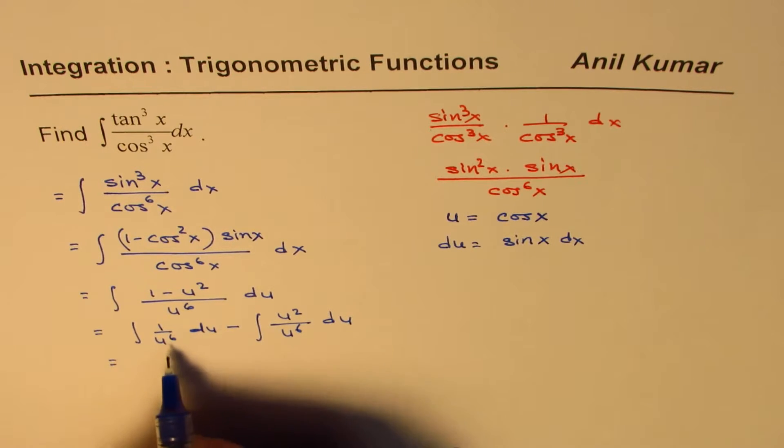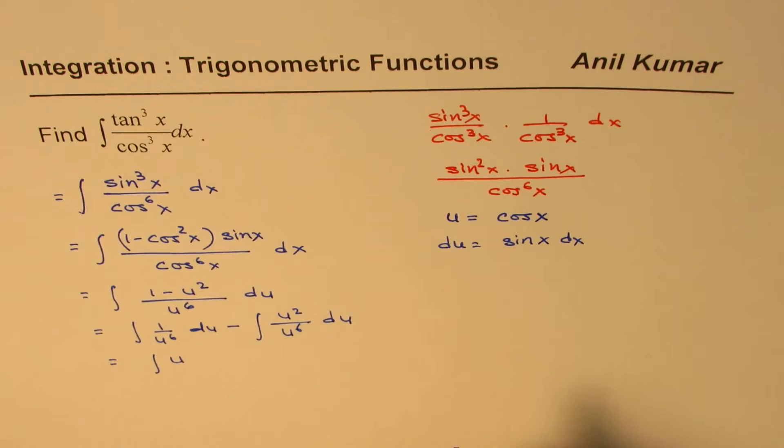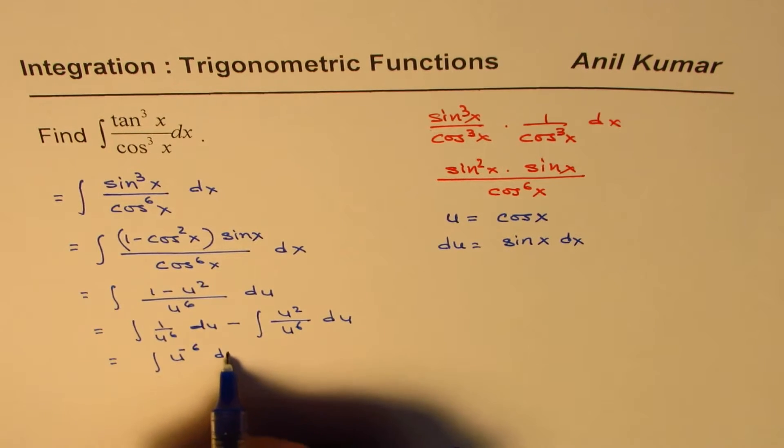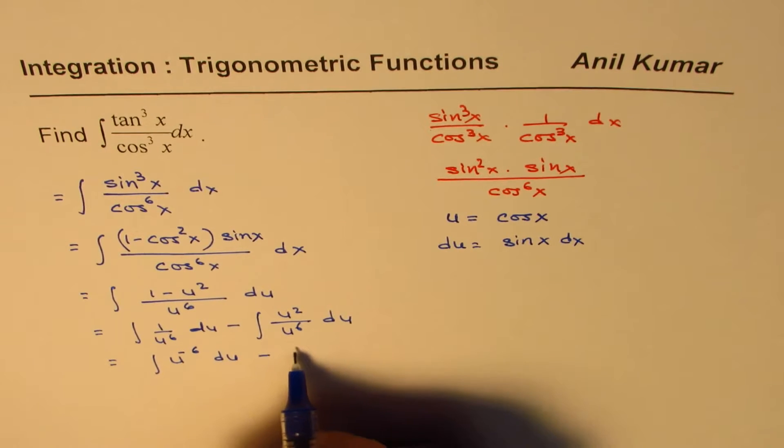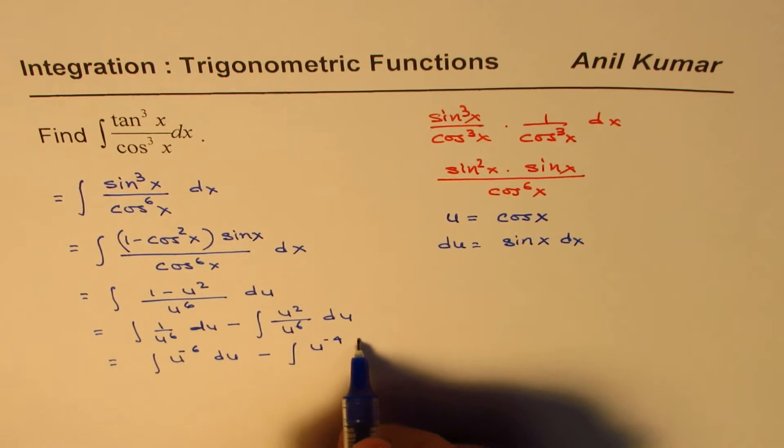Now, this is u to the power of, let me rewrite this as u to the power of minus 6 du, and here we can simplify this, and that becomes u to the power of minus 4 du.